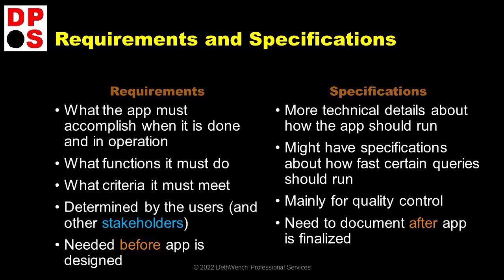This requirements writing process helps the PM set up the team and all the tasks on the Gantt. After the application is developed, finally at the end, specifications are written. These are more like technical details that the app has to meet once it is being used and in production. Sometimes specifications say how fast certain queries should run or how often data should be backed up. Specifications are mainly for quality control.